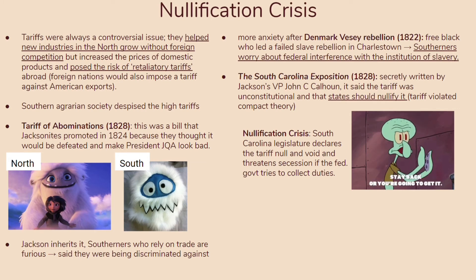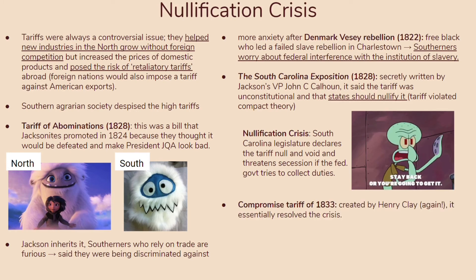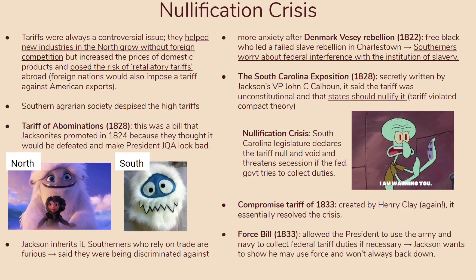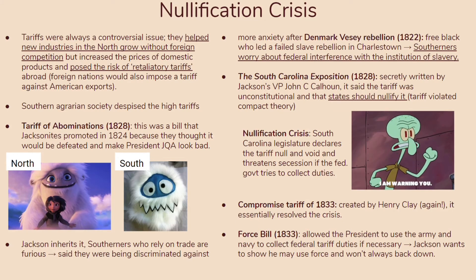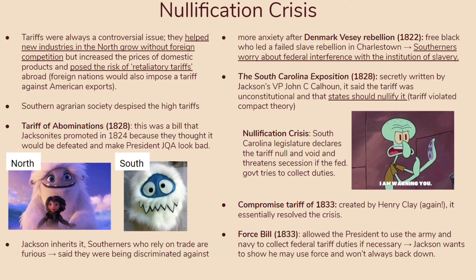Even though Andrew Jackson was a partisan president, he wanted to make sure the union was saved. To solve this, he passed the Compromise Tariff of 1833, created by Henry Clay, which essentially resolved the crisis. But he also enacted the Force Bill of 1833, which allowed the president to use the army and Navy to collect federal tariff duties if necessary. Jackson wanted to show he could use force and wouldn't always back down, but let it go this time since the crisis was resolved with the tariff.